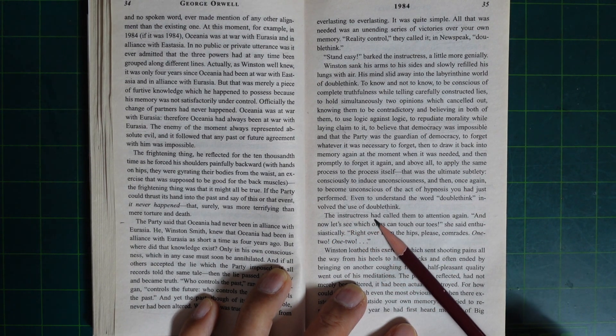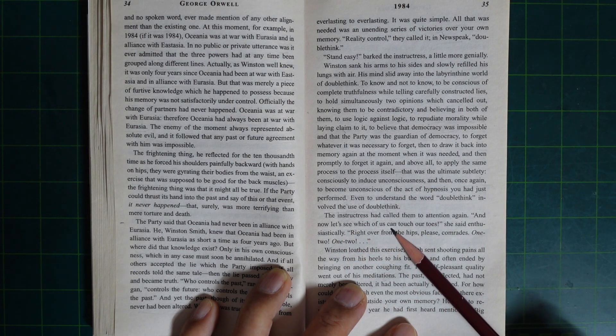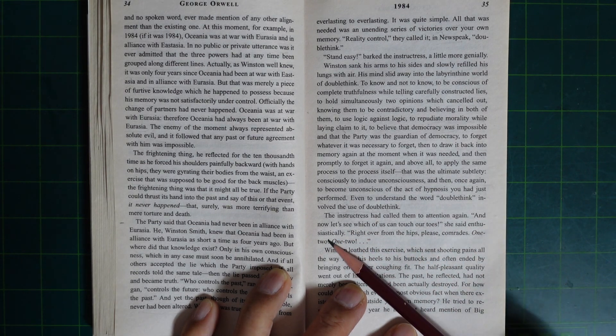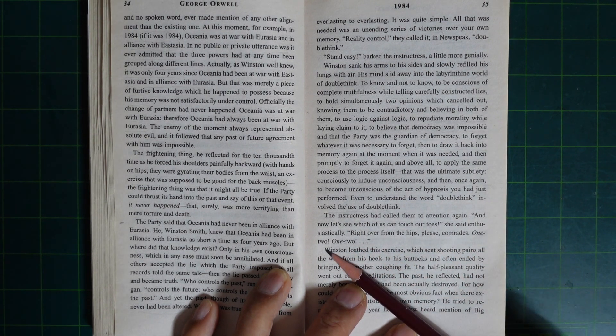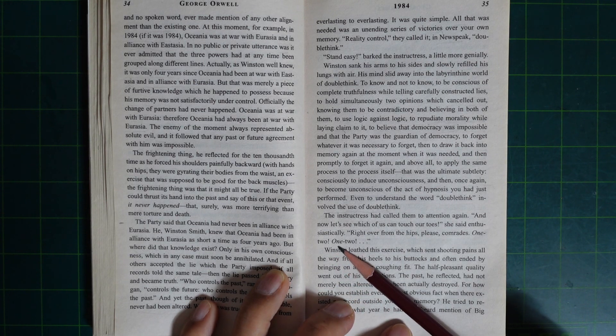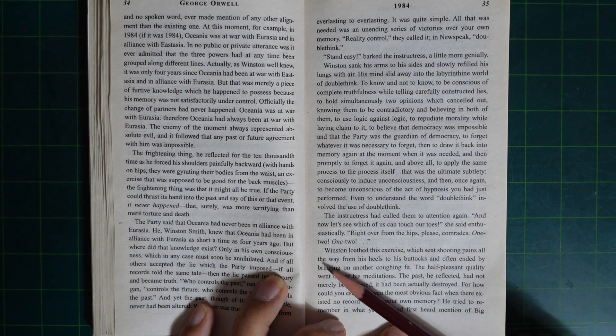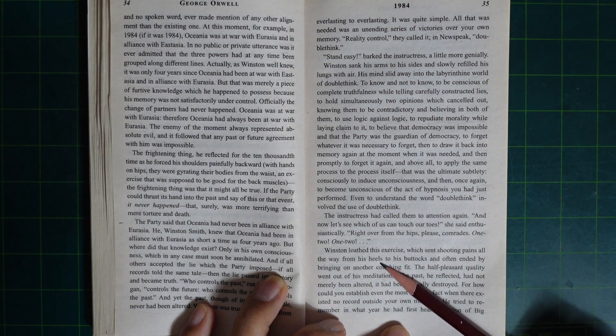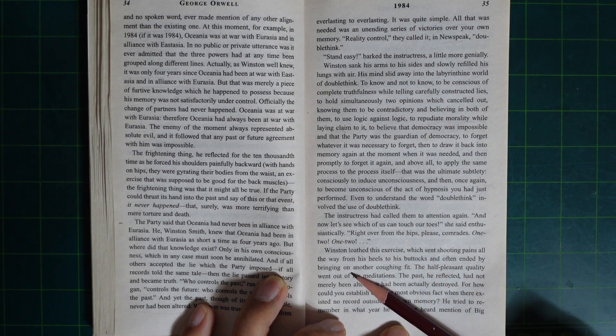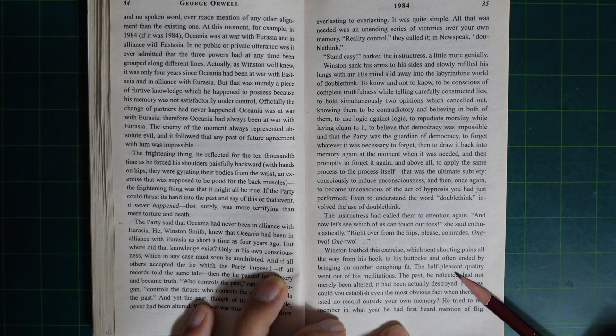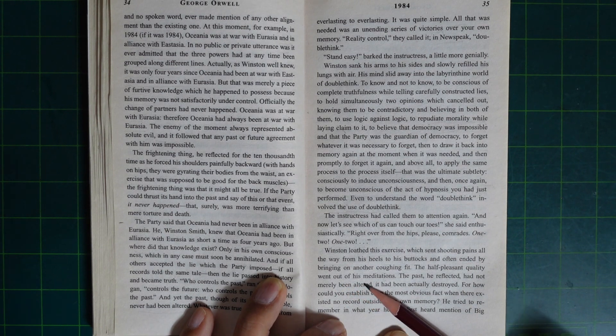The instructress had called them to attention again. And now let's see which of us can touch our toes, she said enthusiastically. Right over from the hips, please, comrades. One, two. One, two. Winston loathed this exercise, which sent shooting pains all the way from his heels to his buttocks and often ended by bringing on another coughing fit.